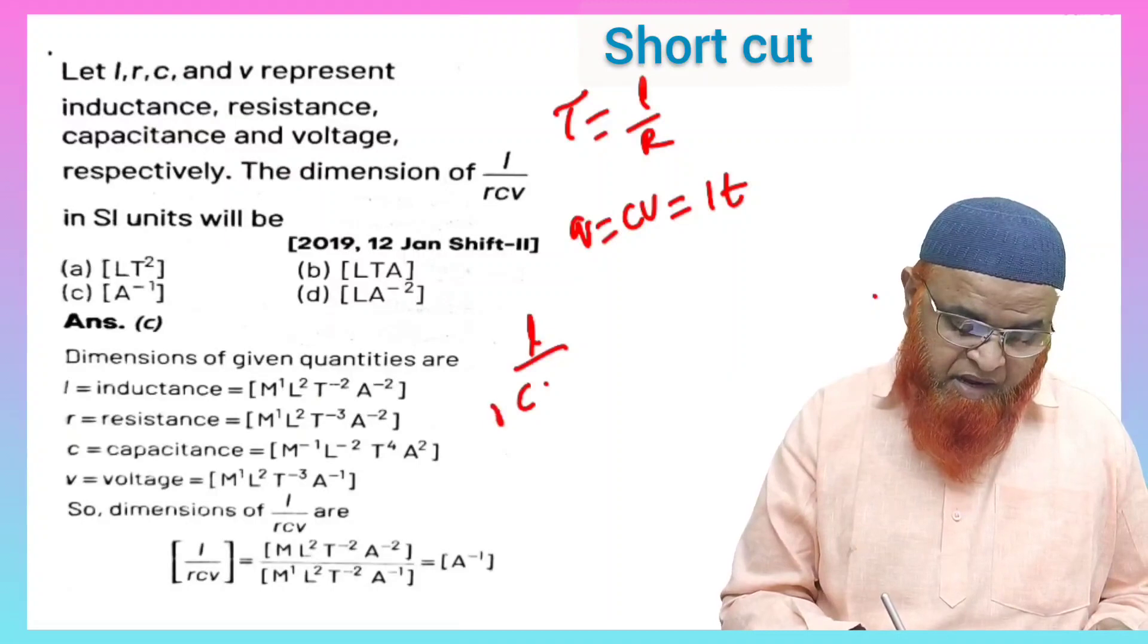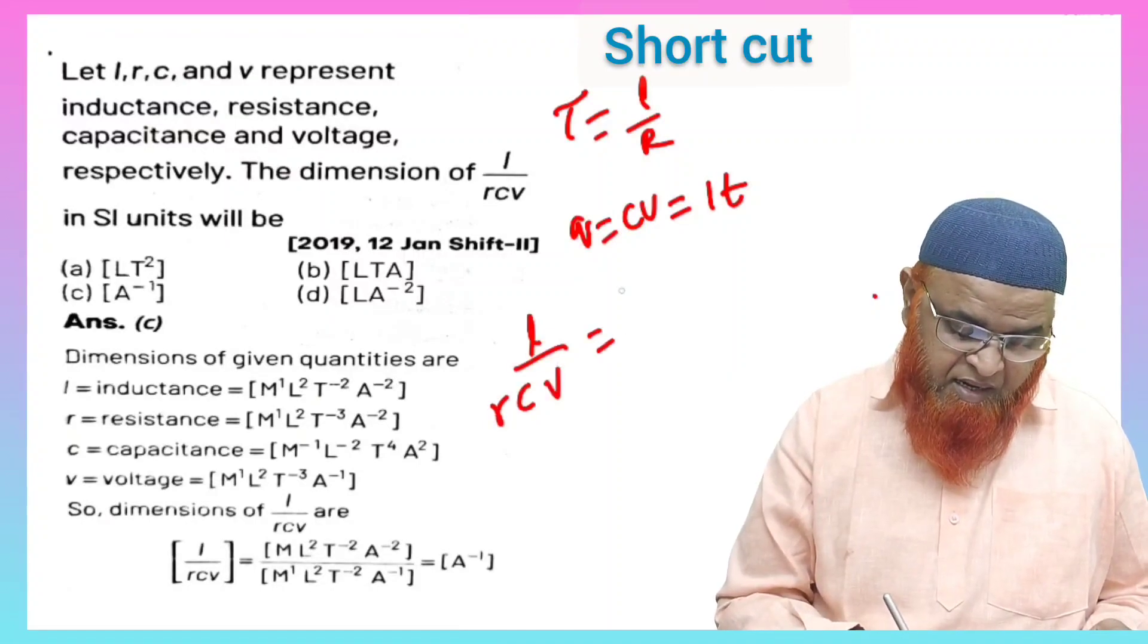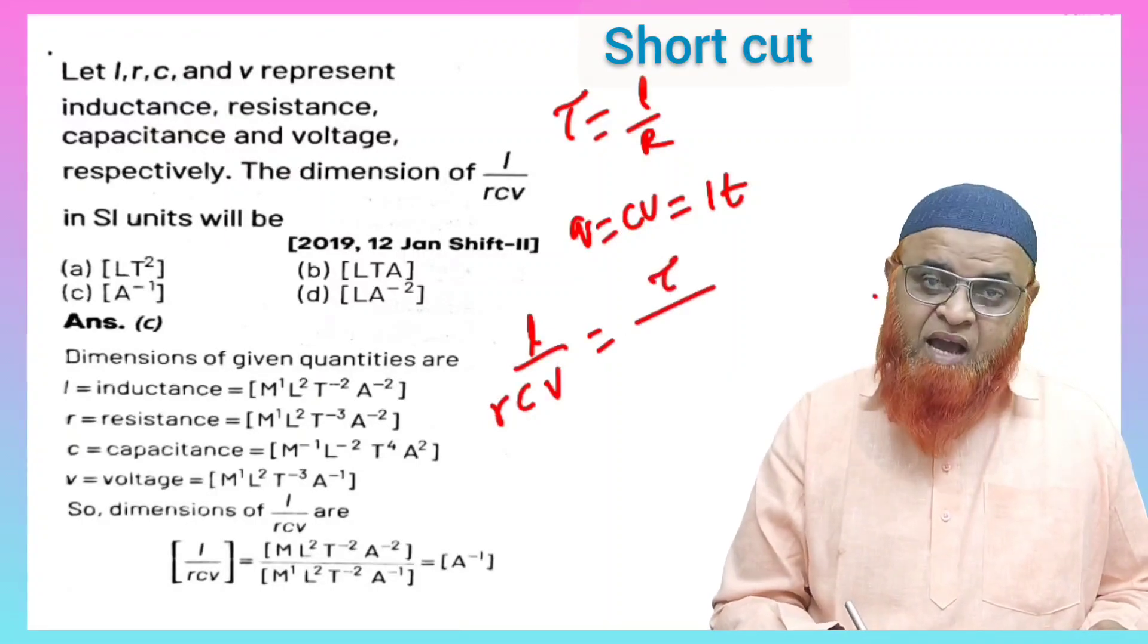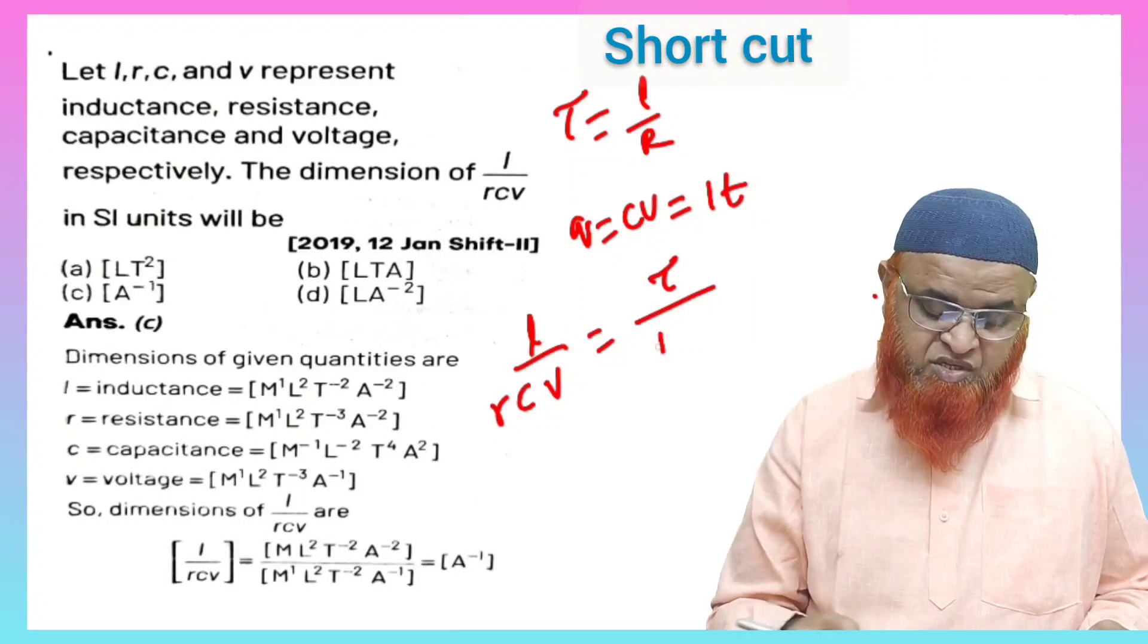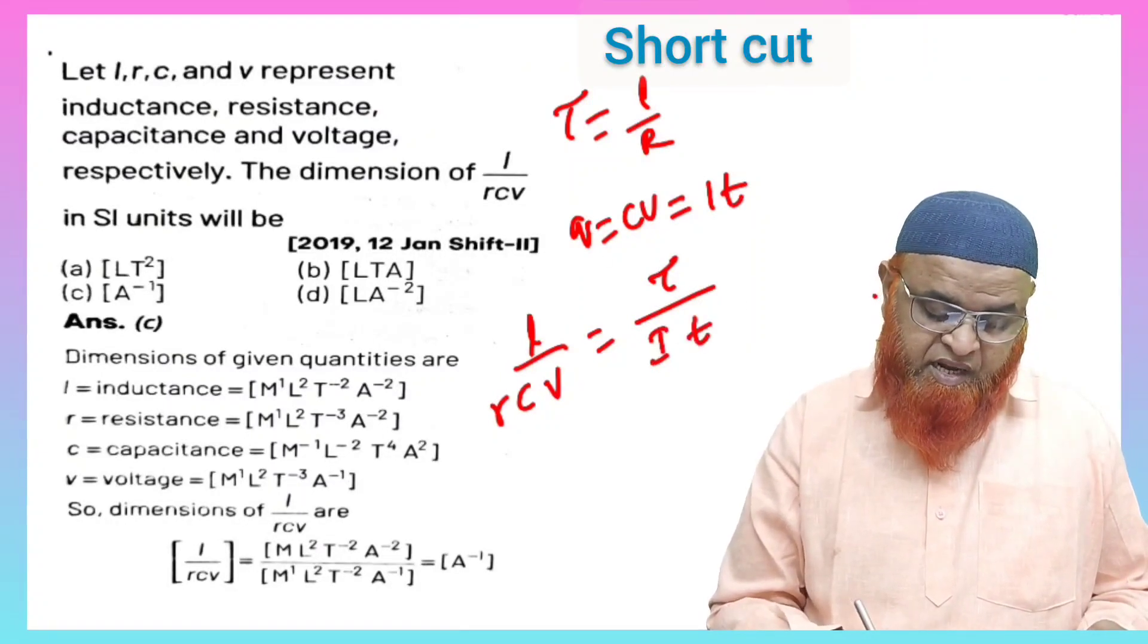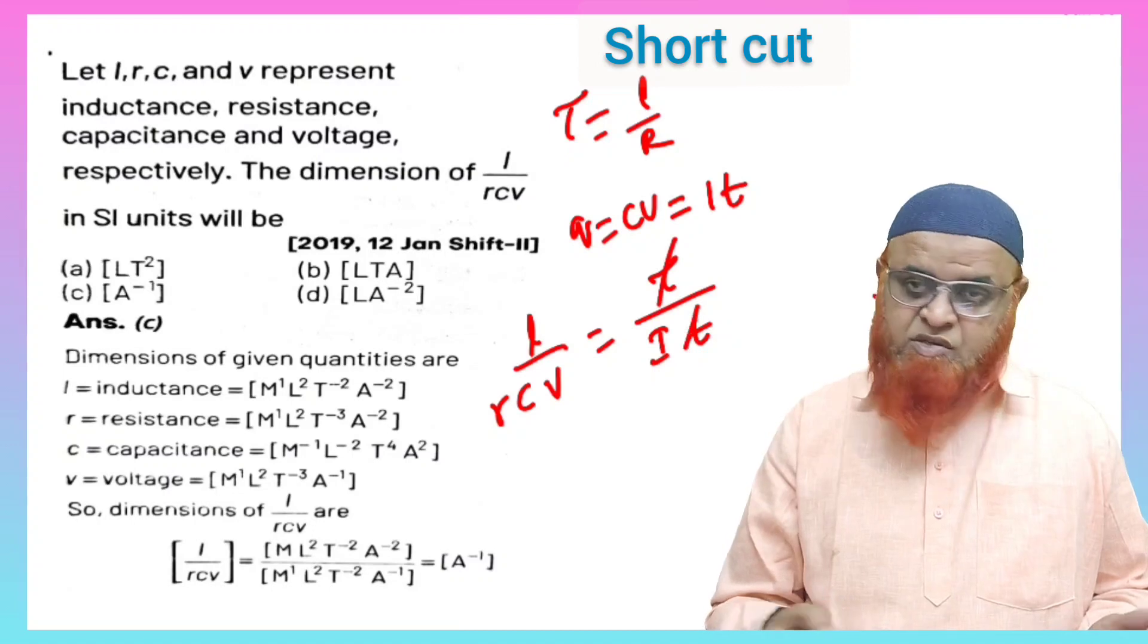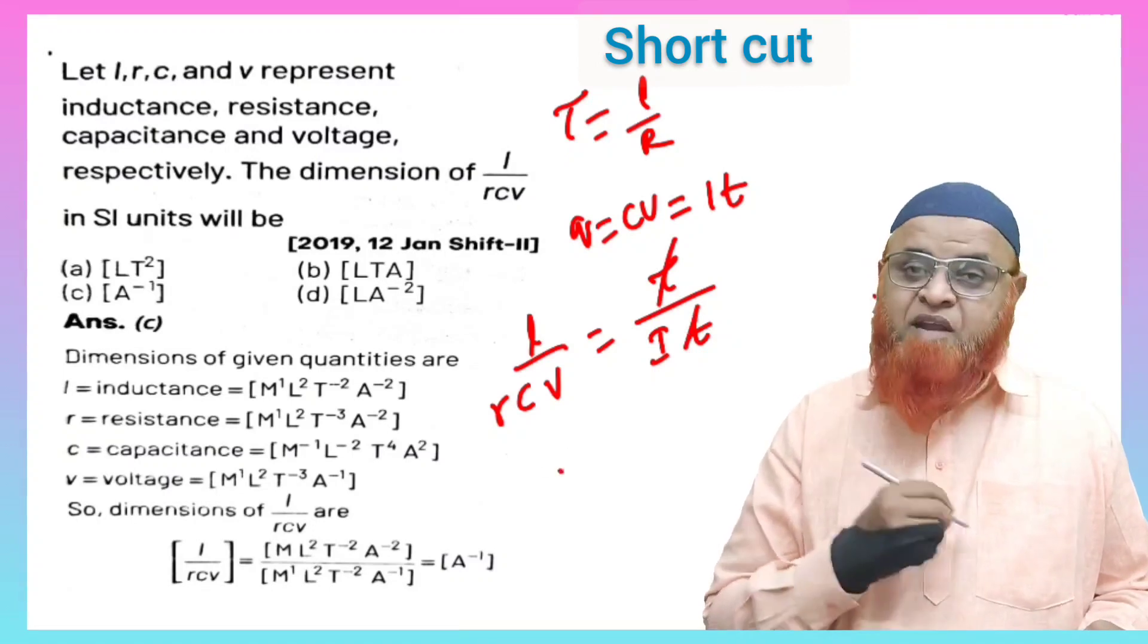So we can write L by R, CV. So L by R can be taken as tau which is time. And Q is taken as I into T which is also time. So time, time gets cancelled.